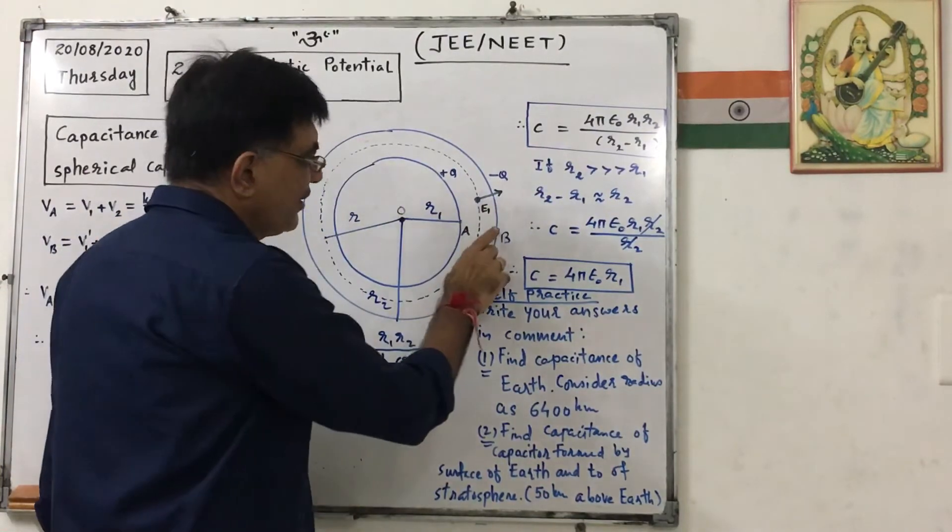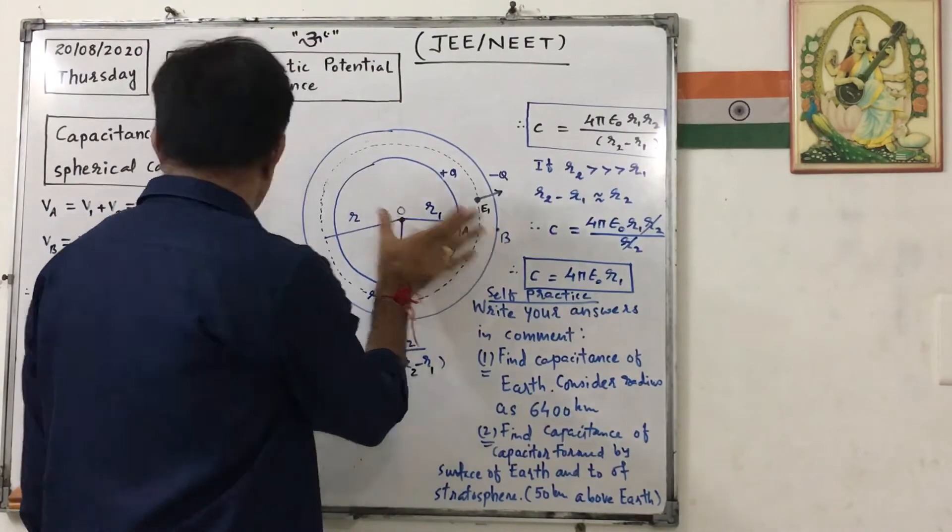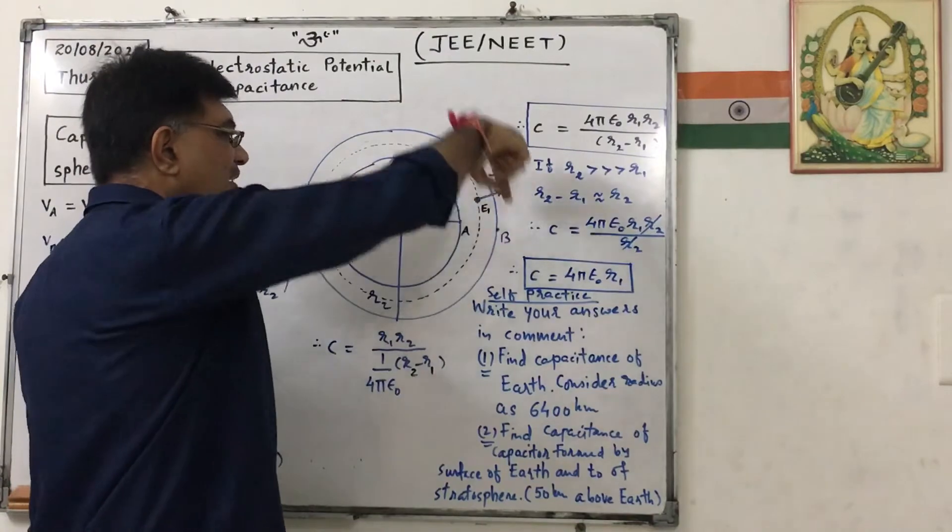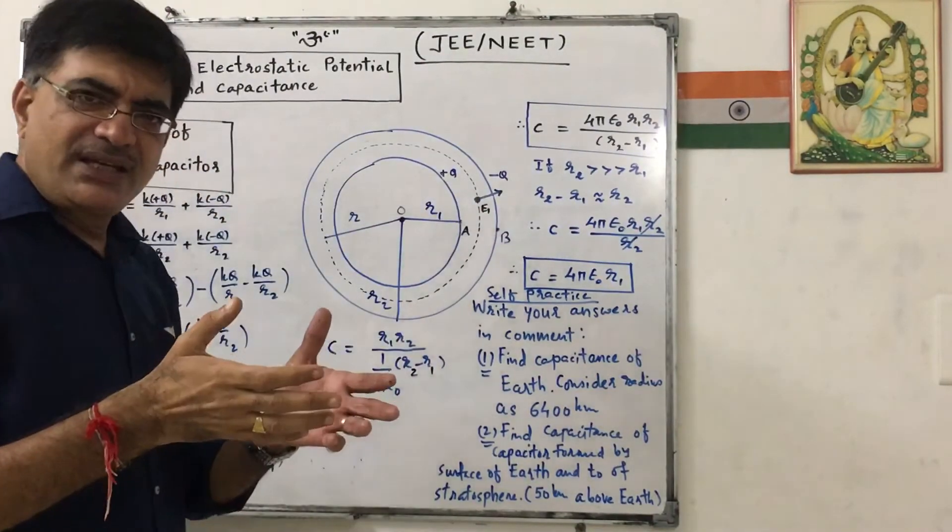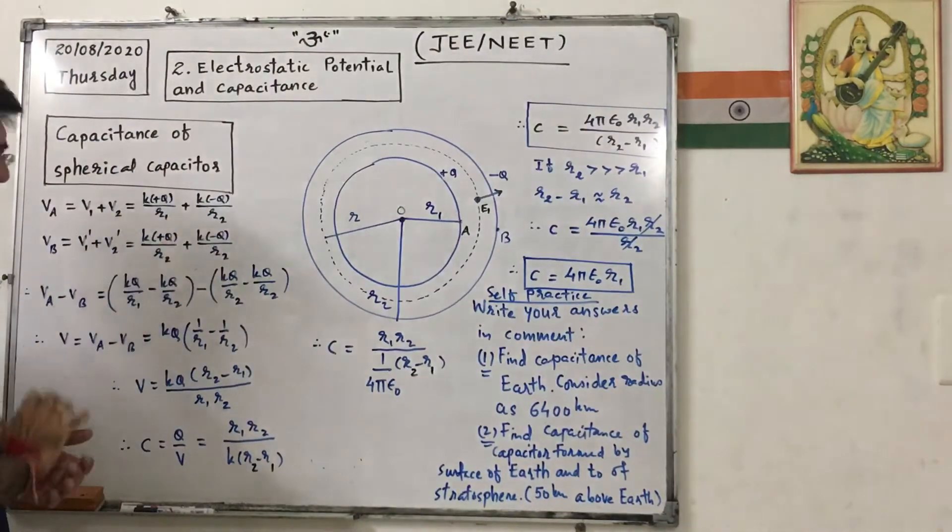So potential here due to this shell is K into Q into this distance, that is R2. This point is on surface of the outer shell, so it is K into minus Q upon R2. In short this is 0.